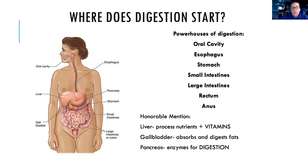There are also some honorable mentions for the GI system. There's the liver, which is really important because it helps to process your nutrients and vitamins. Then there's your gallbladder, which helps to absorb and digest your fats. And additionally, your pancreas helps to secrete enzymes which help with digestion.